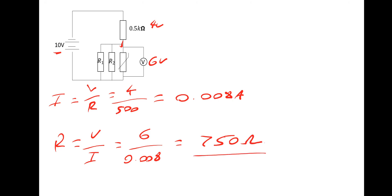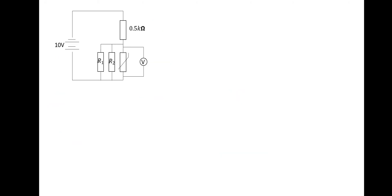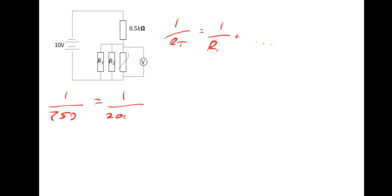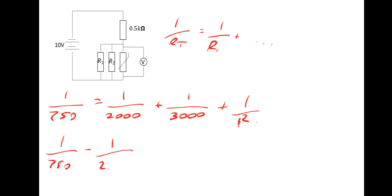Now that the total resistance of the parallel section is 750 ohms, we use the parallel formula: 1 over R_total equals 1 over R1 plus 1 over R2 plus 1 over R_thermistor. So 1/750 equals 1/2000 plus 1/3000 plus 1/R. Rearranging — 1/750 minus 1/2000 minus 1/3000, then taking the reciprocal — gives a thermistor resistance of 2,000 ohms.